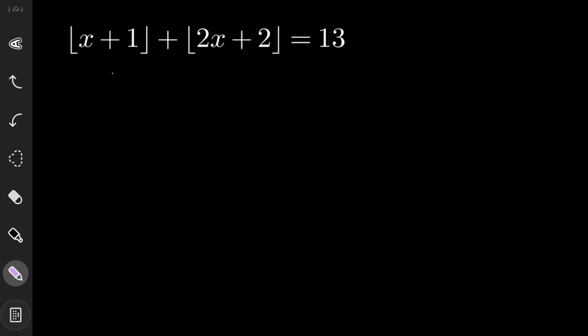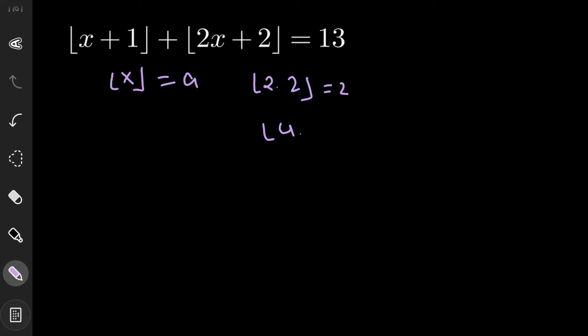First of all, we are dealing with floor functions, so let us recall the definition. If we take the floor value of x equals to some variable a, then a is a perfect integer — the greatest integer smaller than or equal to x. For example, floor(2.2) = 2, floor(4.3) = 4, and floor(2) = 2.